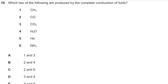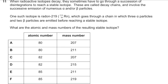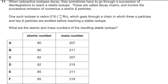Question 10: Which two of the following are produced by complete combustion of fuels? The options are CH₄, CO, CO₂, H₂O, HE, and NH₃. The answer is D — options 3 and 4: CO₂ and H₂O. Question 11: Radon-219 undergoes a decay chain emitting three alpha particles and two beta particles before reaching a stable isotope. An alpha particle decreases mass number by 4 and atomic number by 2; a beta particle leaves mass number unchanged and increases atomic number by 1.